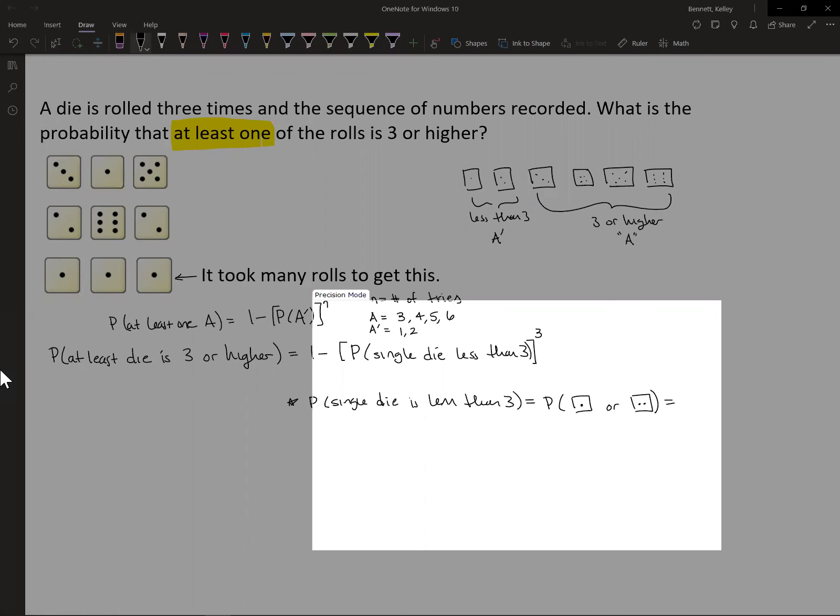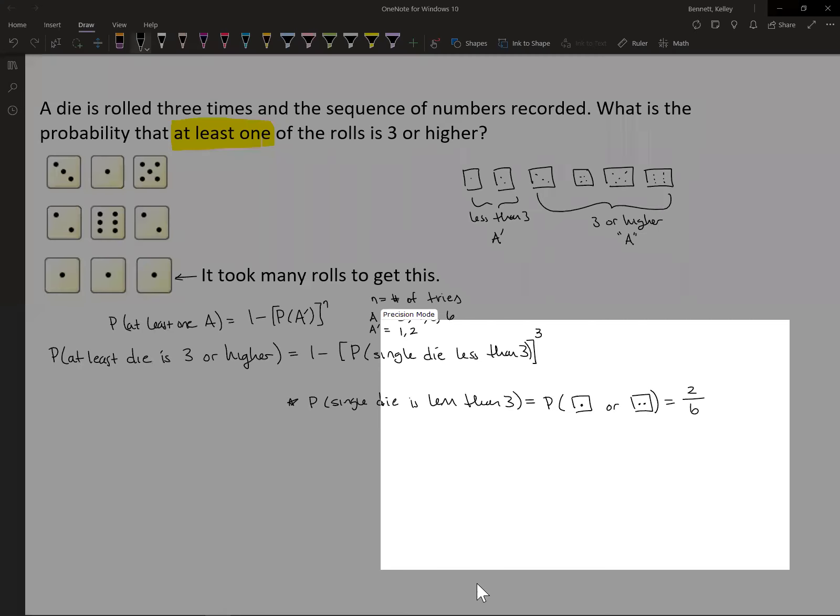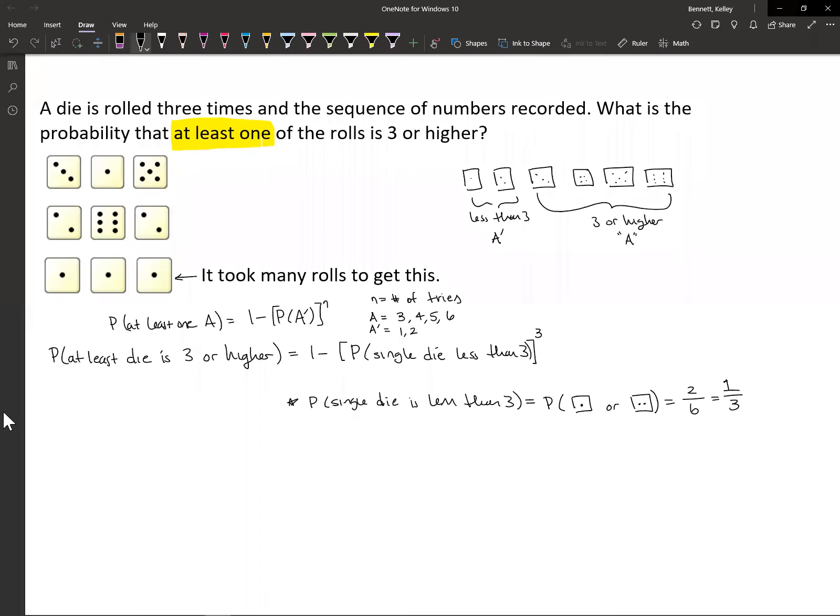And there's two ways to do this: I could get a one or I could get a two. And there's six total possible things that can happen. So that's going to be two-sixths. I can reduce this to one-third as well. So that's the probability of A complement. And actually, that's all we need. That's the only missing piece.